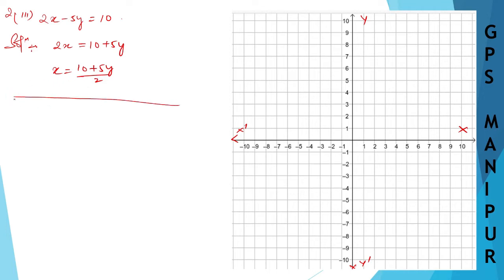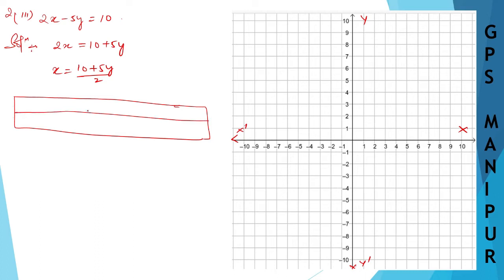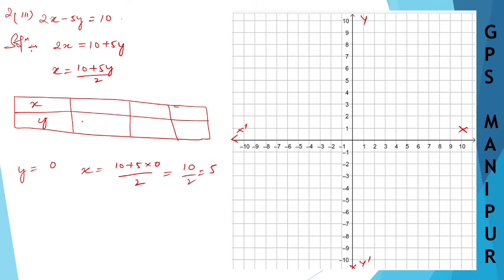Drawing the table with x and y columns. When y is equal to 0, x will be equal to 10 plus 5 into 0 divided by 2, which is 10 divided by 2, which is 5. So when y equals 0, x is 5.